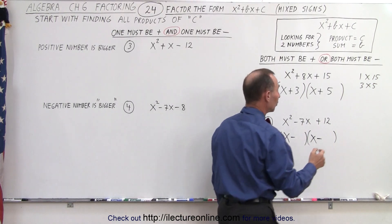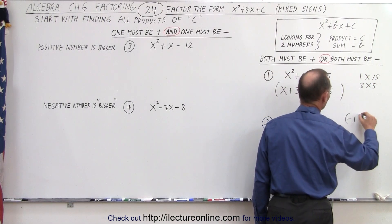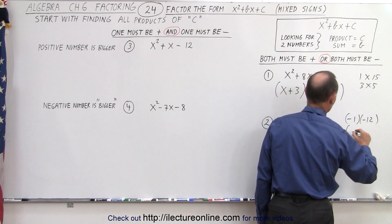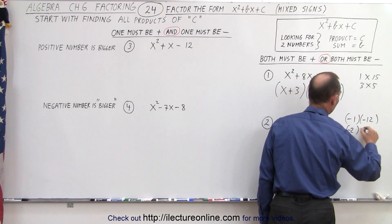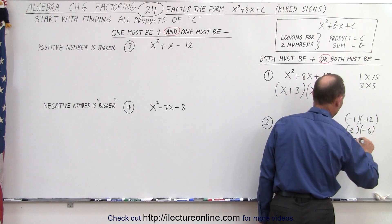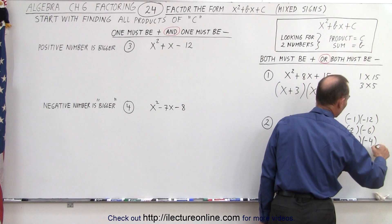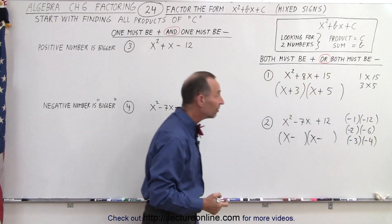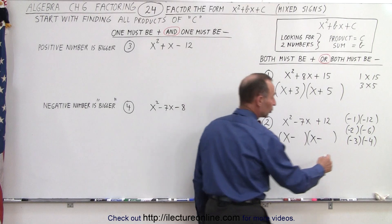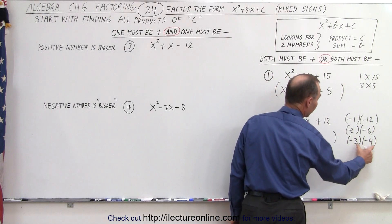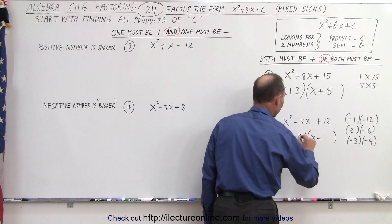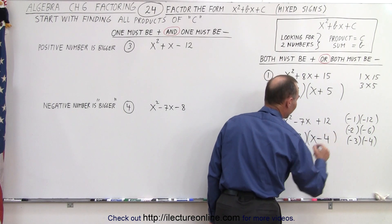They both have to be negative, so I get negative 1 multiplied times negative 12, negative 2 multiplied times negative 6, and negative 3 multiplied times negative 4. Those are the only three possibilities. When I add them together, I should get negative 7. Notice the only two numbers that match are 3 and 4 — together they make 7. 2 and 6 is 8, 1 and 12 is 13. So negative 3 and negative 4.